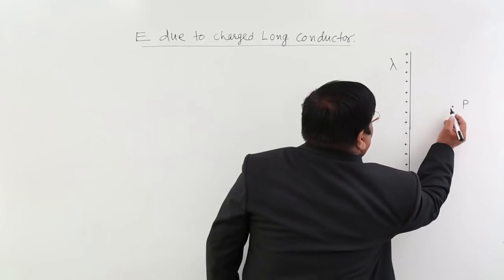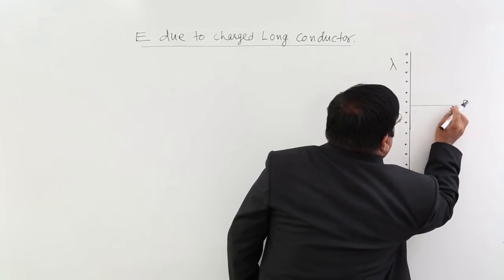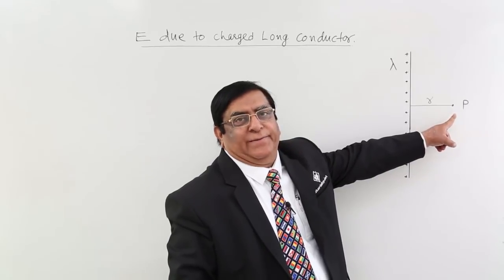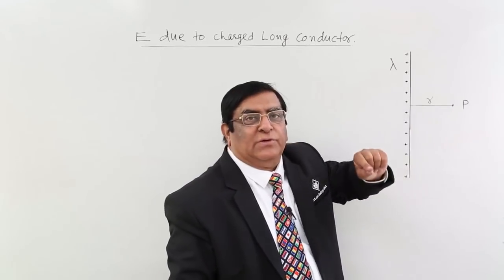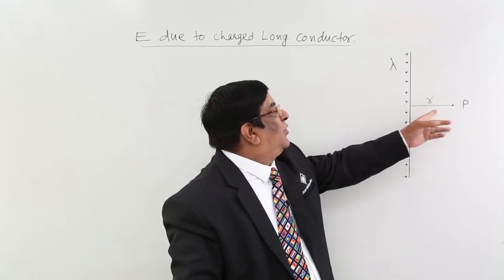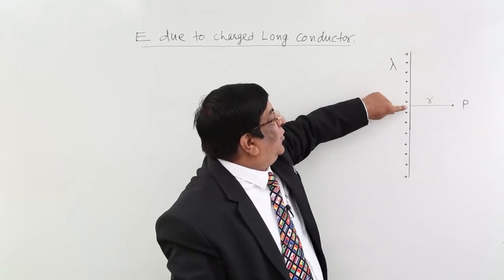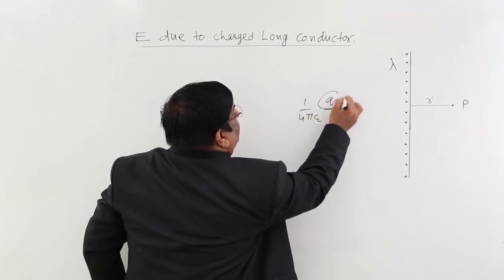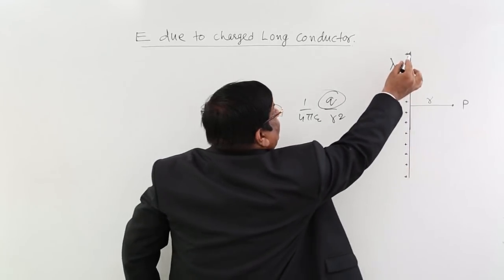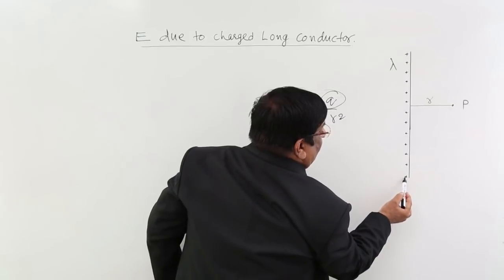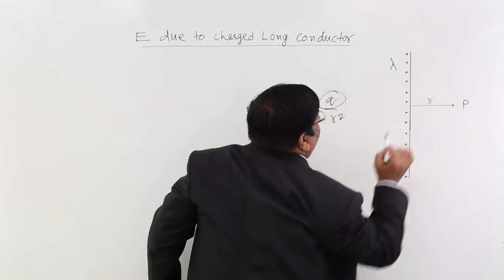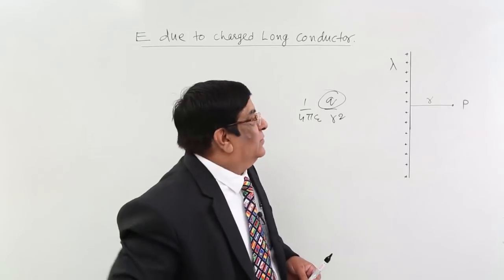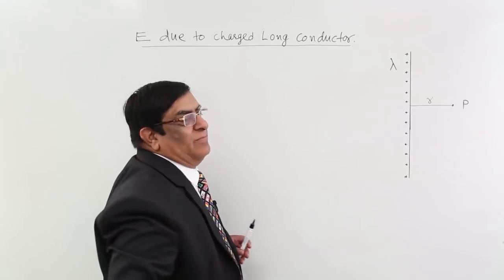There is a point P at a normal distance R and we are supposed to find the electric field at this point. We cannot apply the formula Q/R² here because Q is not a point charge — the complete charge is not located at one point. It is distributed, and from different parts R is different, so the electric field varies. This formula 1/(4πε₀) × Q/R² fails. But we have no other direct formula, so what do we do?